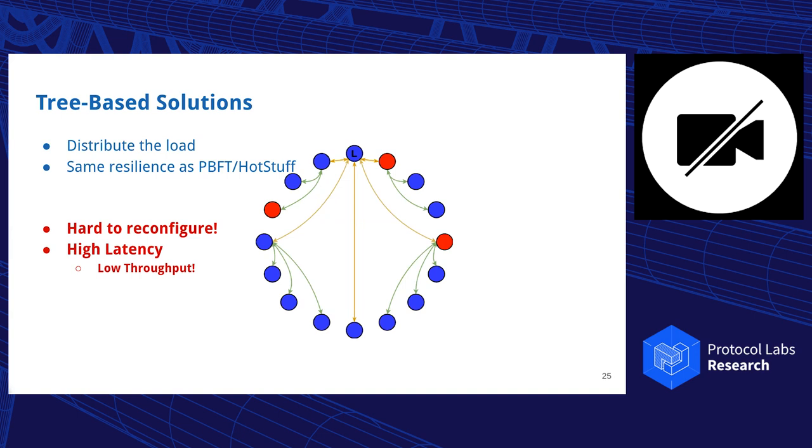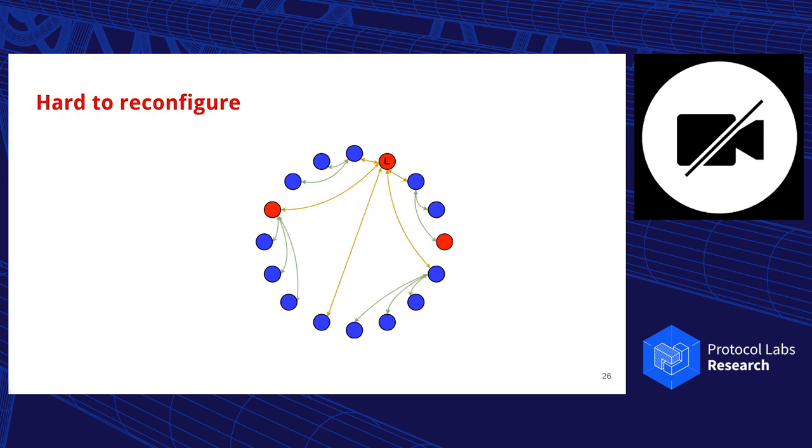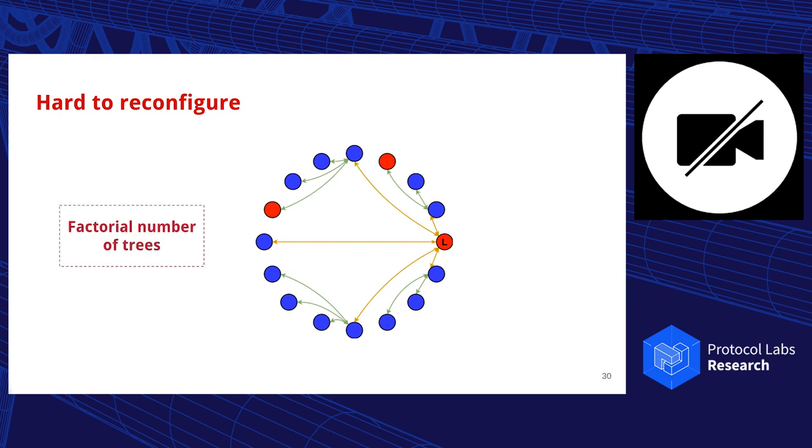HotStuff already has twice the number of communication steps per phase. Now a tree, based on the depth, has four, six, eight, ten times more, which leads to problems in terms of throughput as well. In terms of reconfiguration, just doing the same approach of trying a different leader won't do it, because depending on the number of internal nodes and how the faults are distributed in the system, we might never find a correct tree this way. There's even a factorial number of different trees where only a small percentage is correct, so it's a really hard problem to solve.